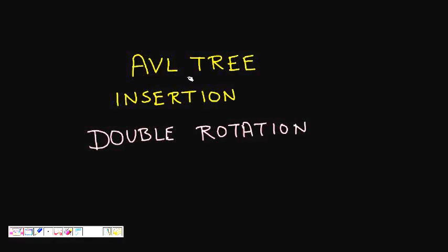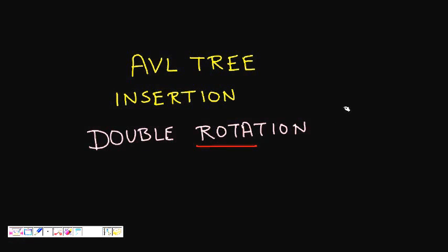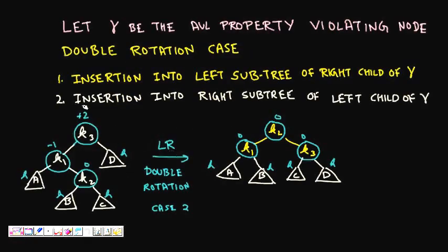In this lecture, we will learn about AVL trees and double rotation in AVL trees. In the first two lectures, we learned about AVL trees, their basics, insertion, and single rotation to fix violations of the AVL tree property and make a balanced tree. Now we will see that when there is a left-right rotation case or right-left rotation case, we need a double rotation to fix it.